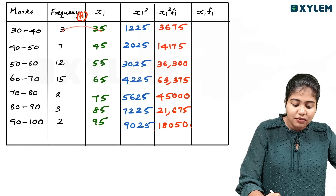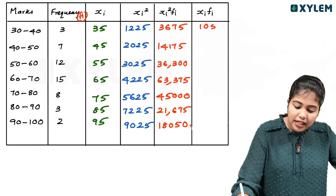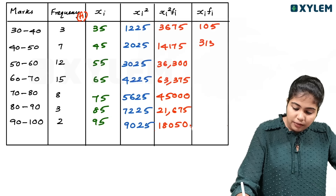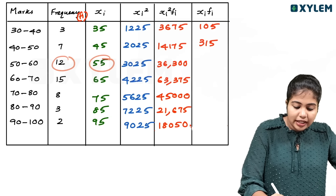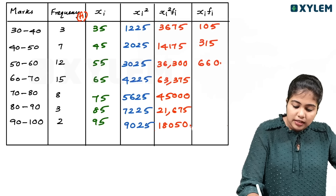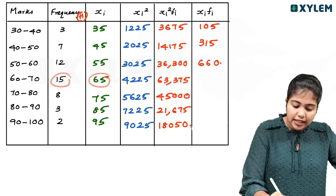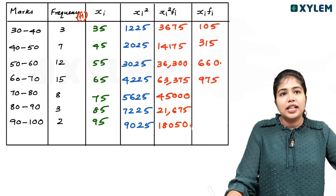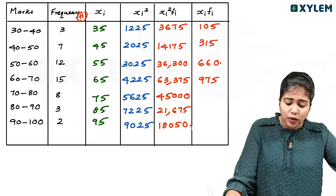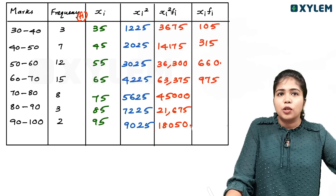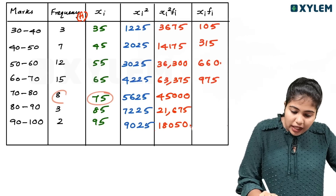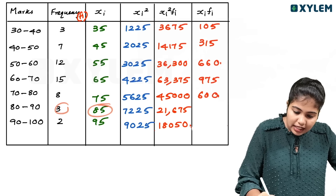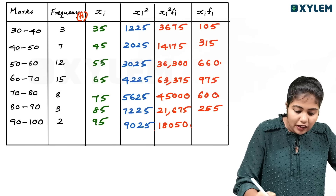Now computing xi fi: 35 into 3 is 105. 45 into 7 is 315. 55 into 12 is 660. 65 into 15 is 975. 75 into 8 is 600. 85 multiplied by 3 is 255, and 95 multiplied by 2 is 190.